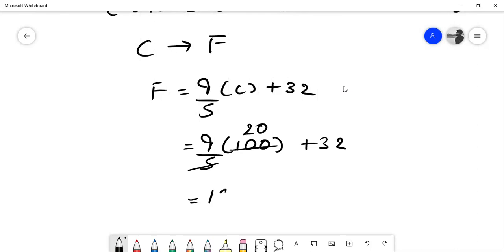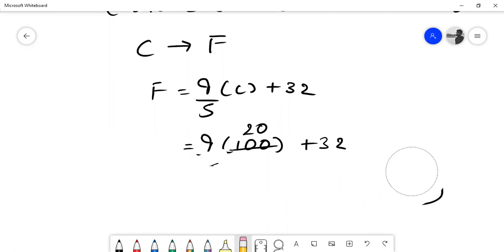180 plus 32, so you get 212 Fahrenheit. So in this way you will be able to convert the Kelvin into Fahrenheit and Fahrenheit into Kelvin, okay? So today I'll quickly summarize the whole conversion.